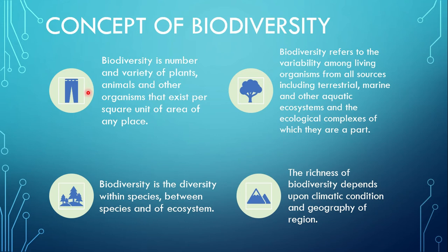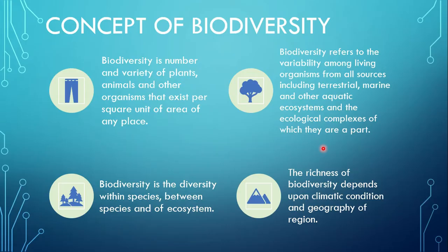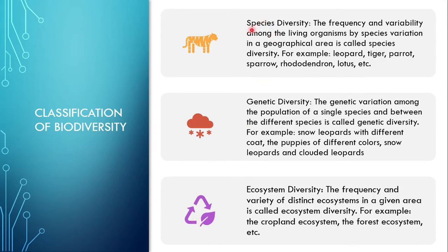You can focus on the first and second definition; you can also remember the third but if you find it difficult, just remember the first and second one. Now let's go to the classification of biodiversity. According to the second definition — biodiversity is the diversity within species, between species, and of ecosystem — we can classify biodiversity into three types: species diversity, genetic diversity, and ecosystem diversity.